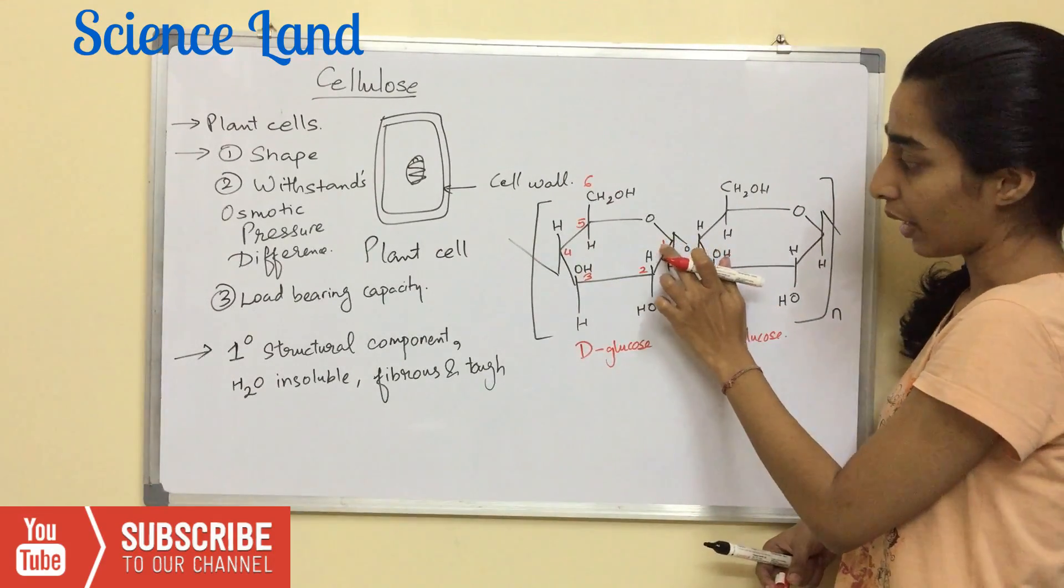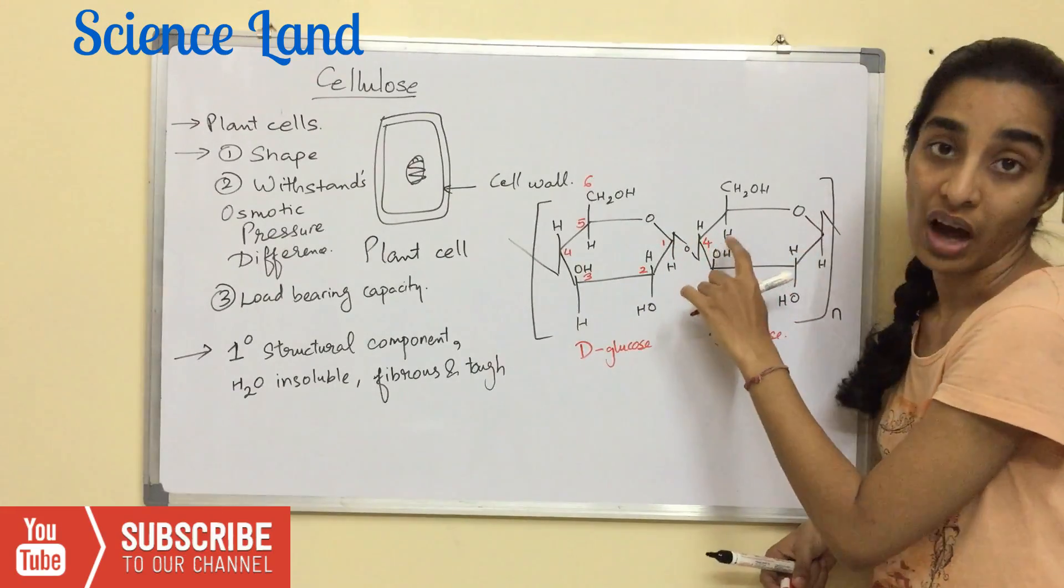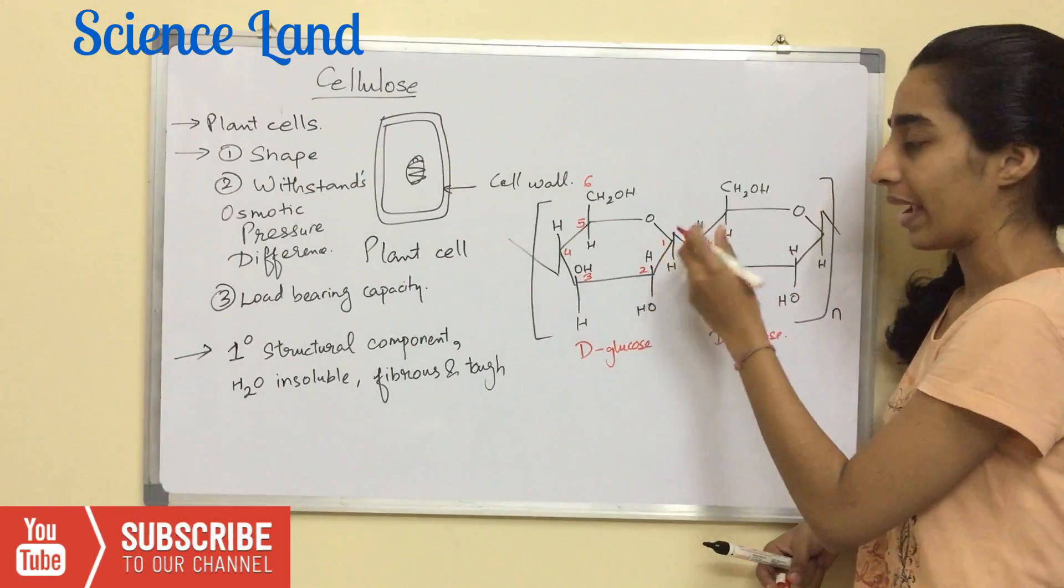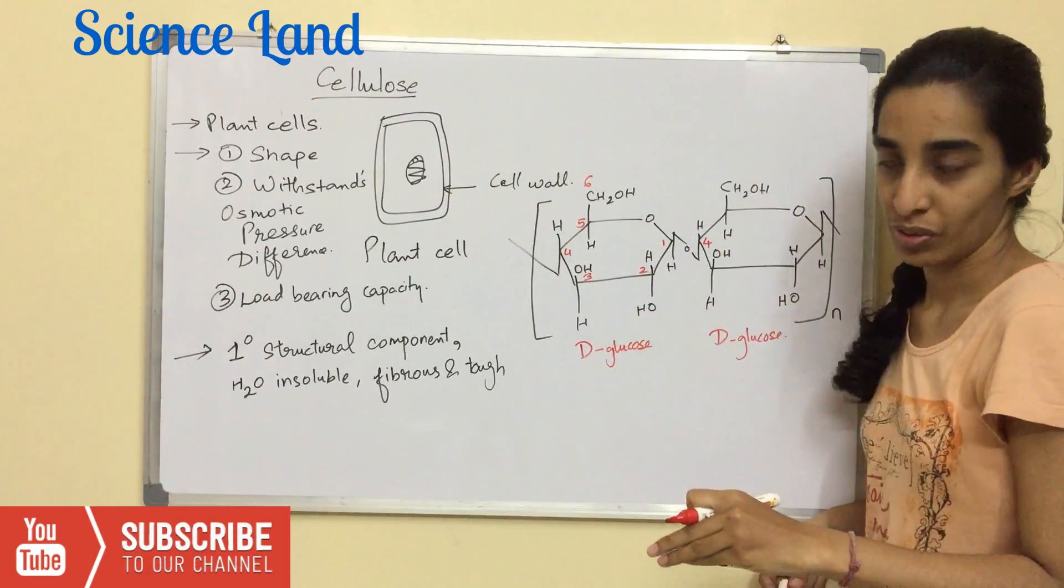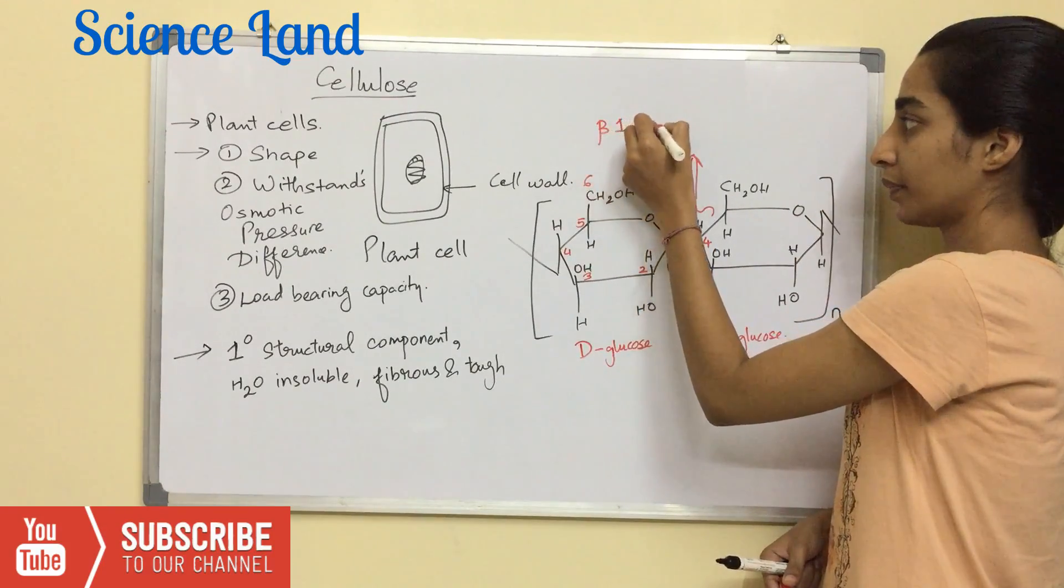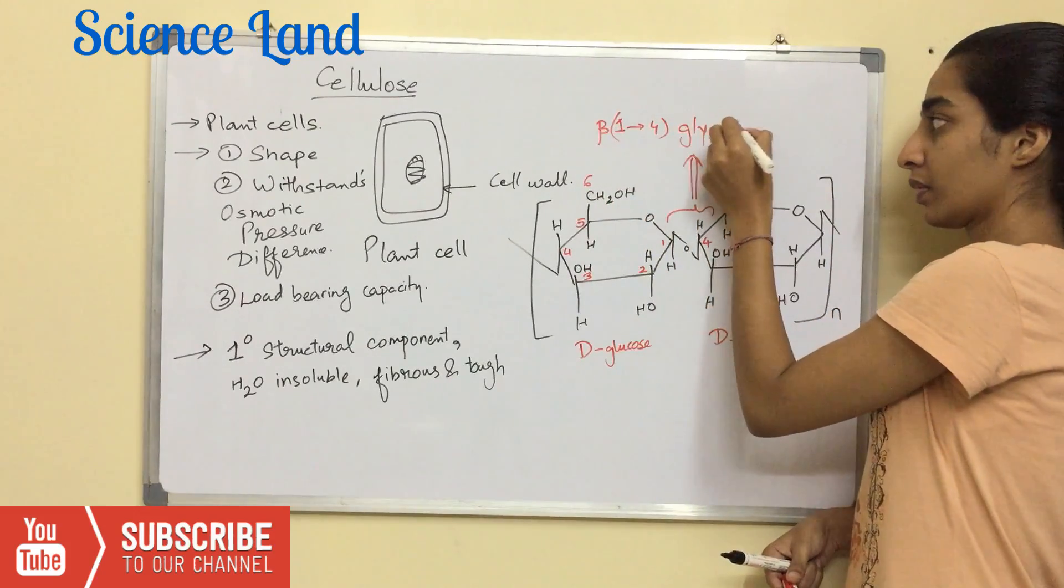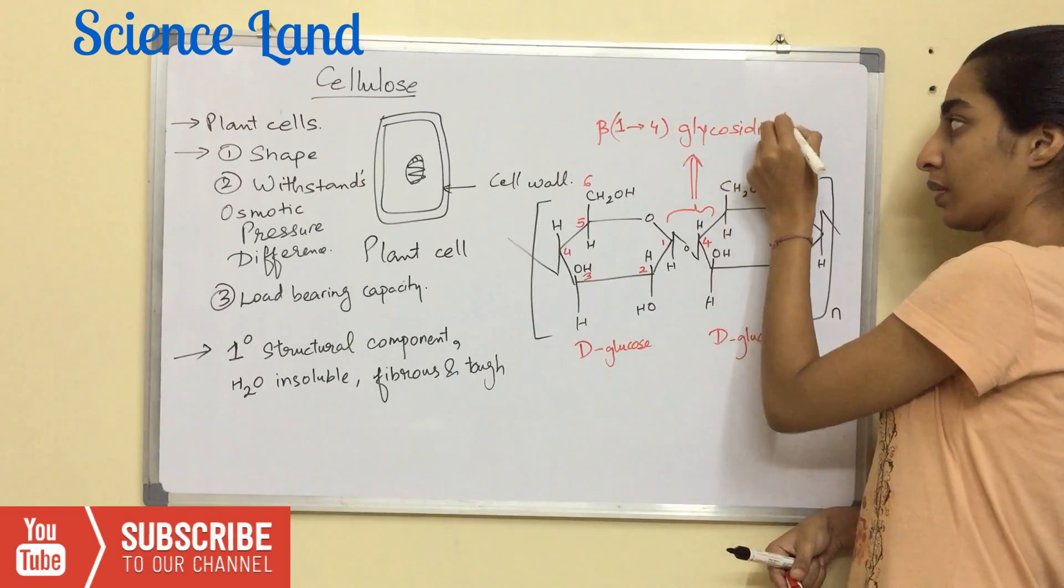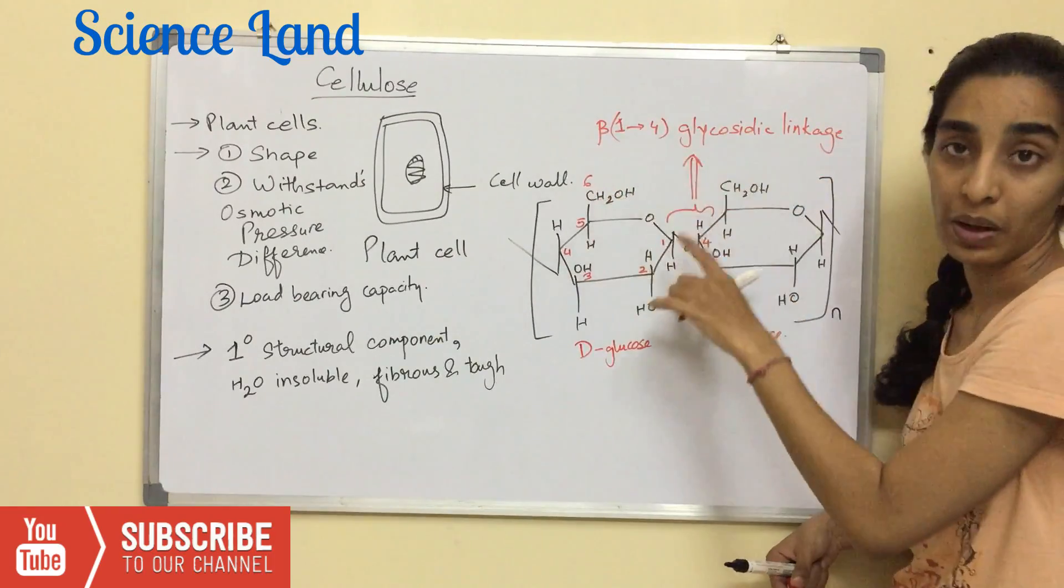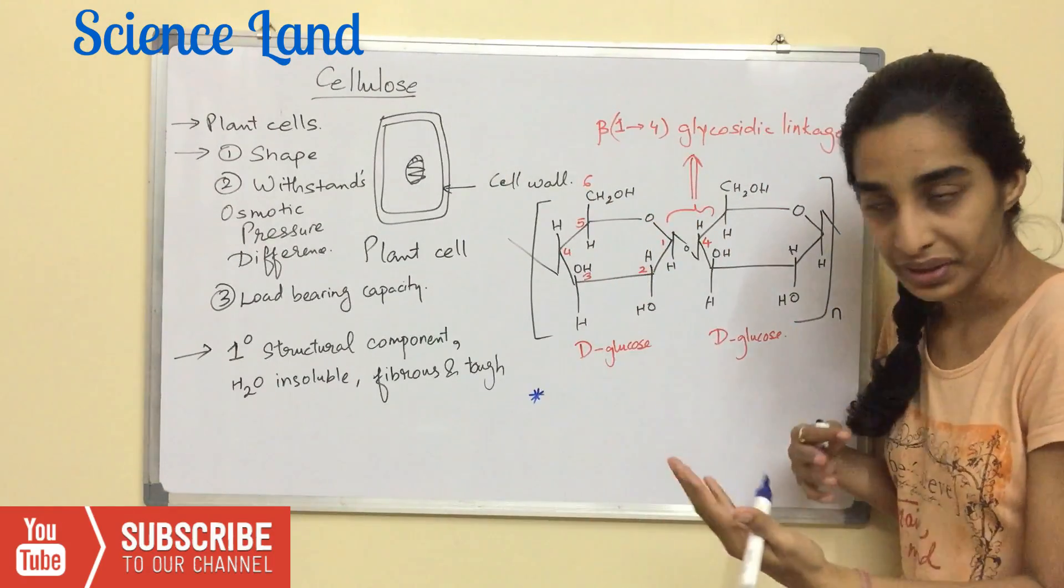So the 1st carbon is attached to the 4th carbon of the next glucose residue via a glycosidic linkage. This linkage is known as beta-1,4 glycosidic linkage. We'll talk about its actual structure more in detail.